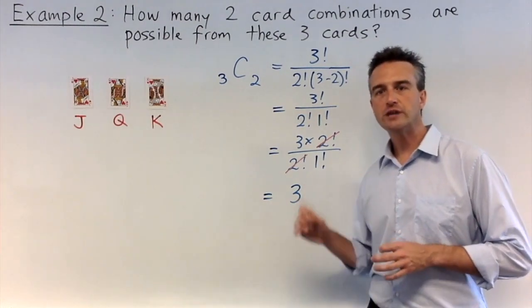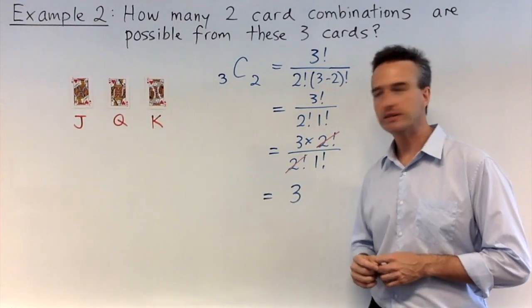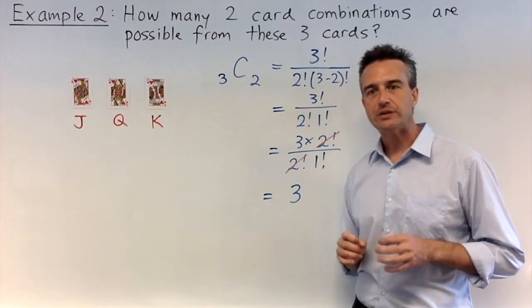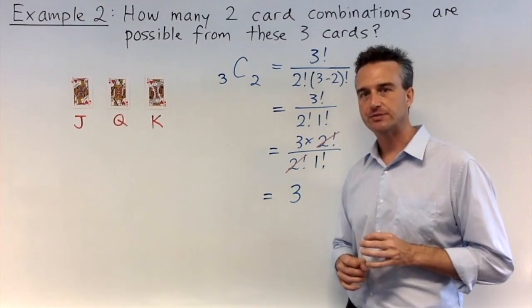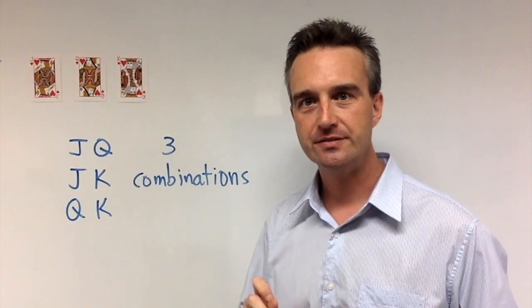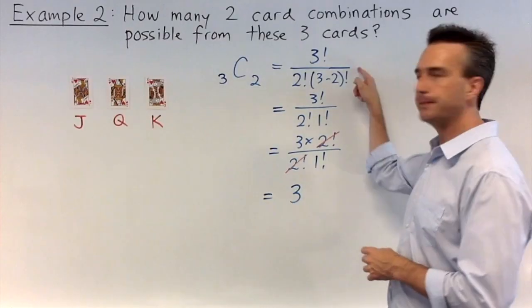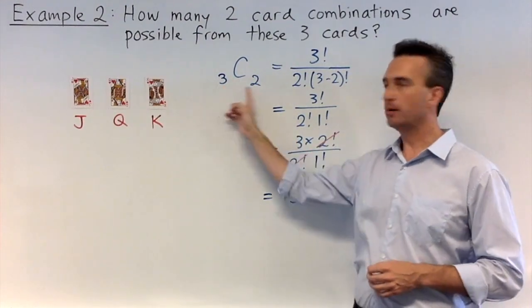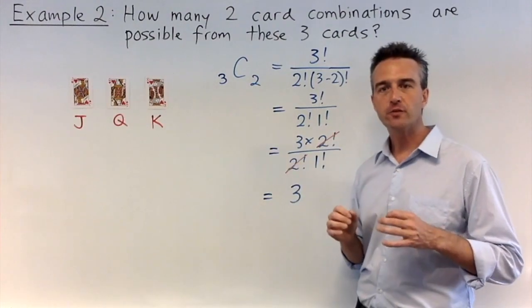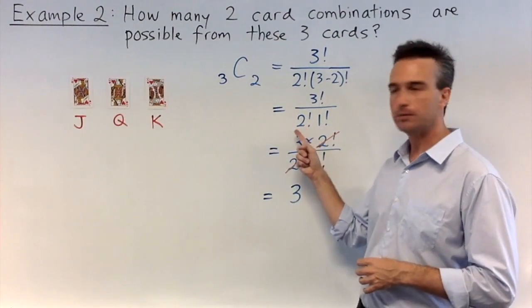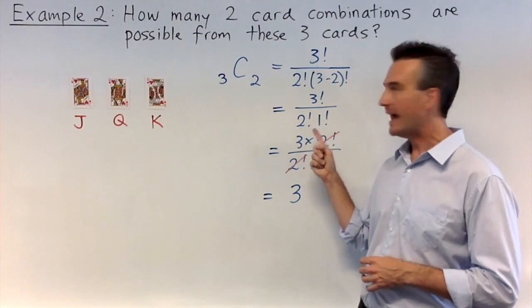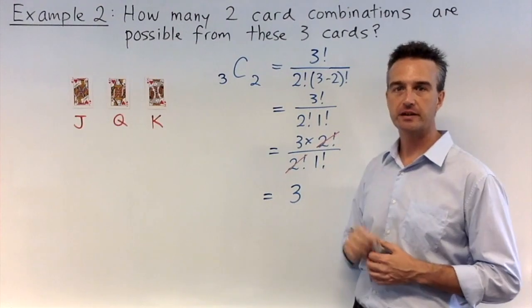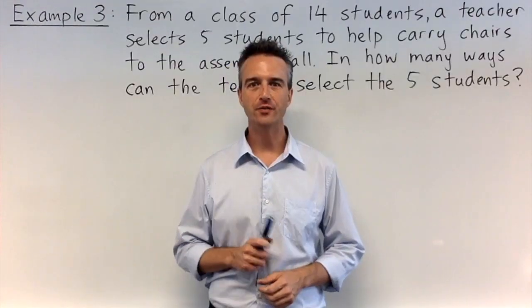So the number of two card combinations from those three cards over there will be three combinations in total. And that agrees with the answer we got at the very beginning when we listed out the combinations. Three combinations. From here on in, I'll probably skip this first step here. I'll probably just jump straight from here down to here. 3 minus 2 is 1. And when you apply the formula, just make sure that the two numbers on the bottom down here add up and give this number here. So in this case, 2 plus 1 should equal 3. That's a little check you can do. Let's move on to a new example.